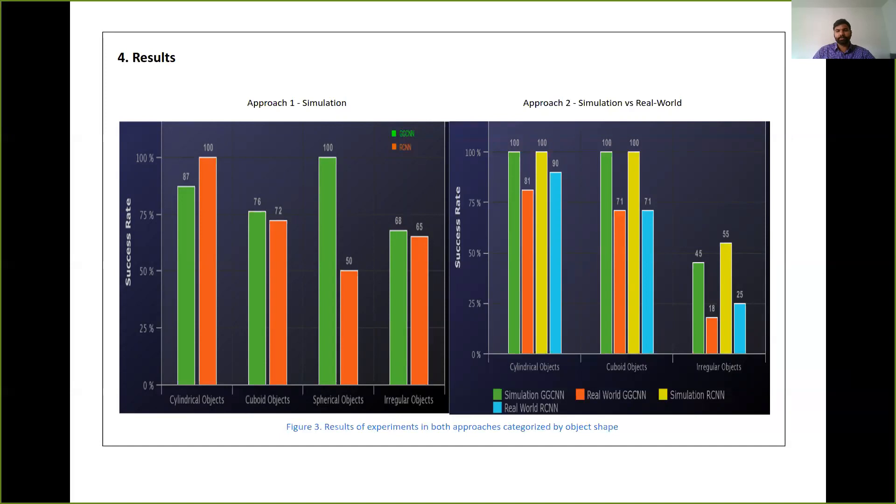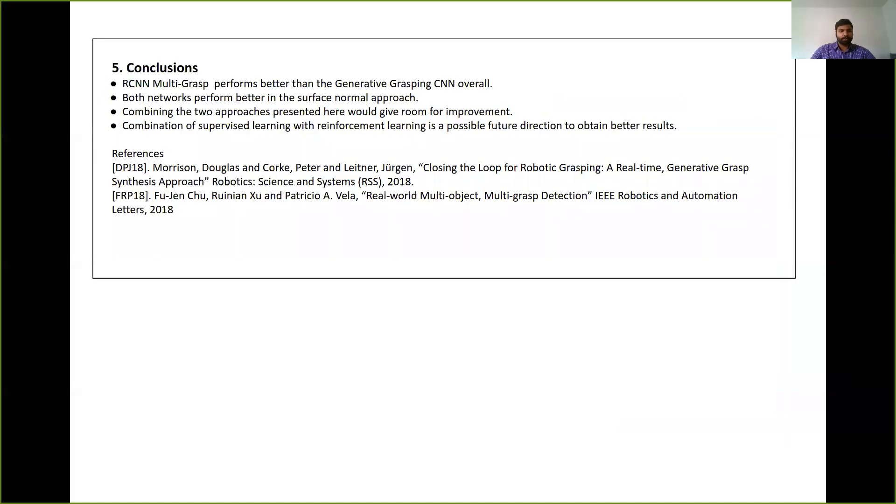Then based on these results, we have formed conclusions. Overall, the RCNN multi-grasp network performs better than the generative grasping CNN network. Both networks perform better in the surface normal approach. This is due to the added capability of side grasps.